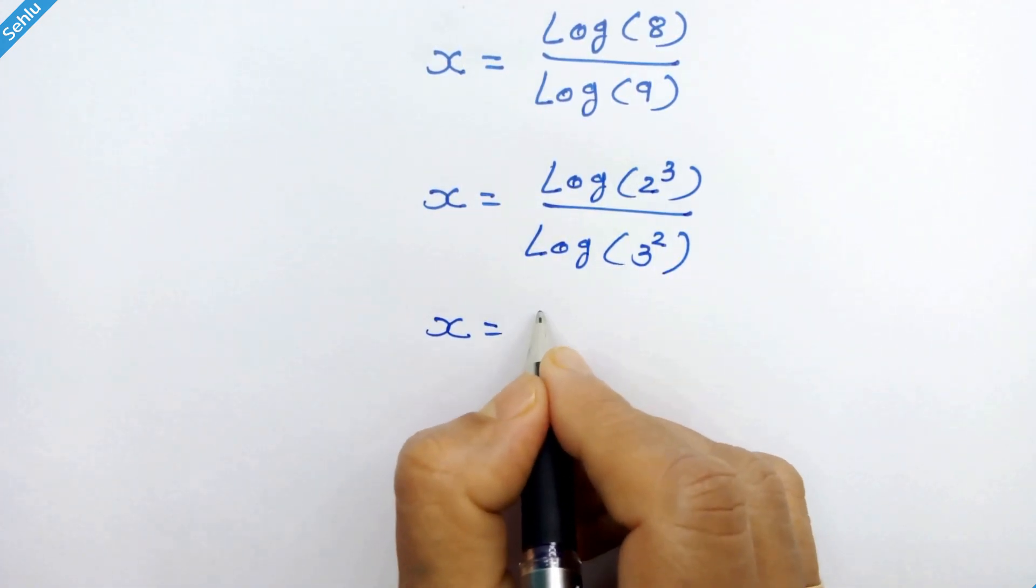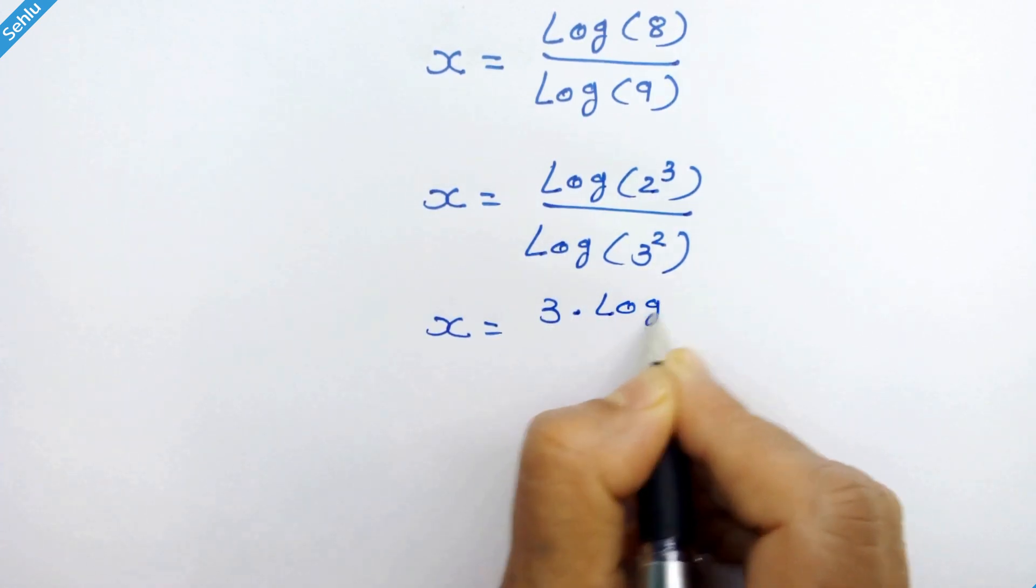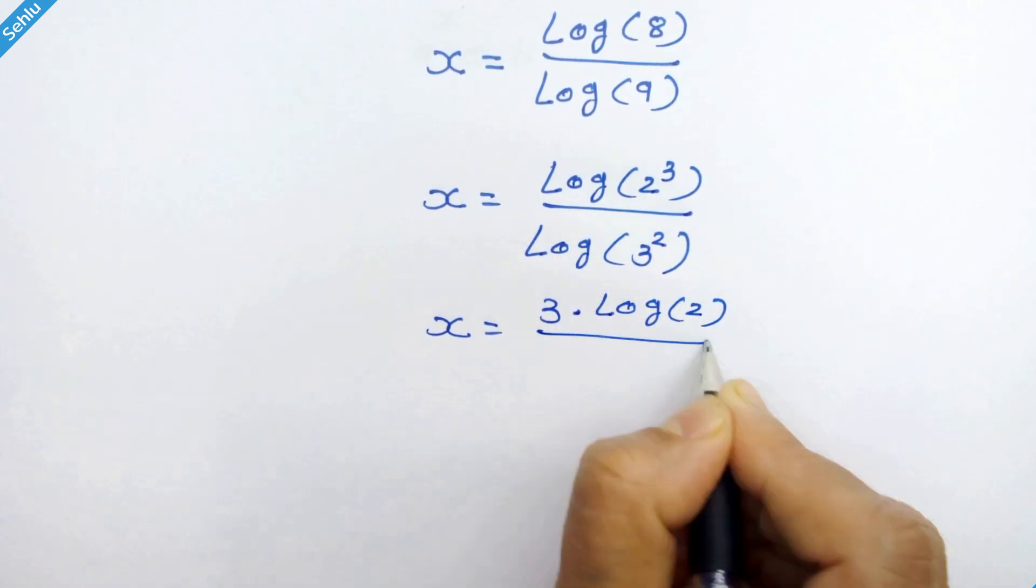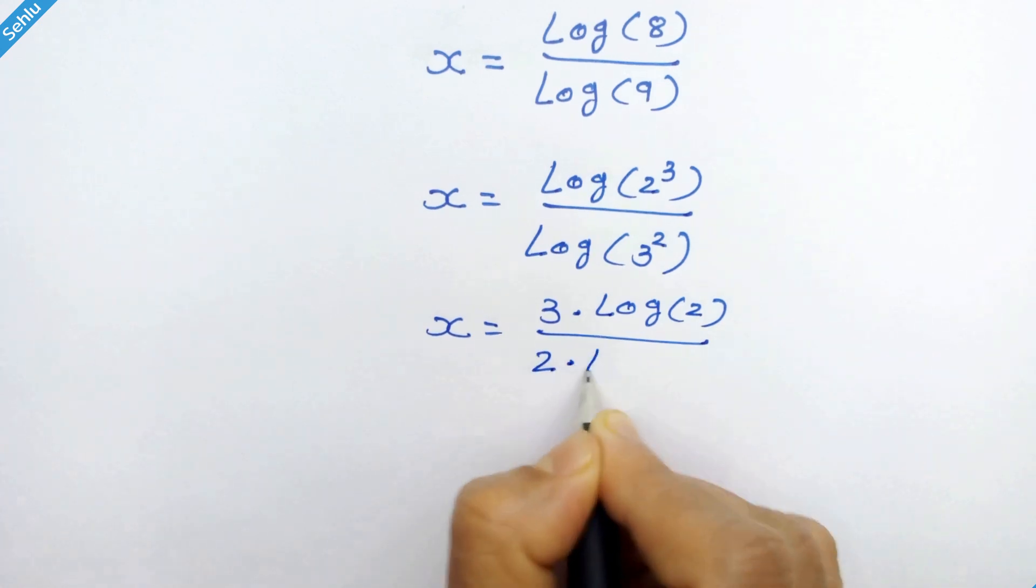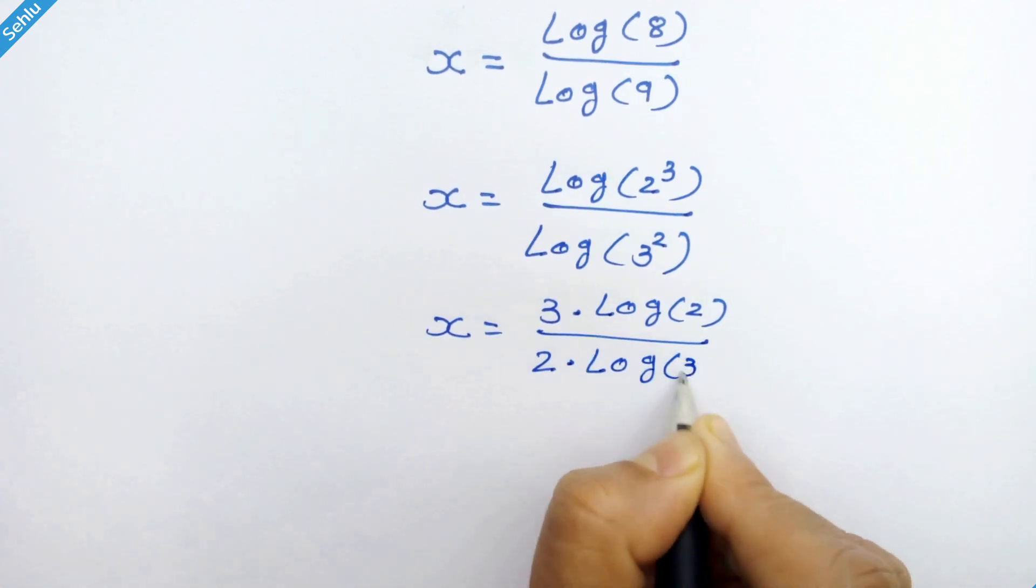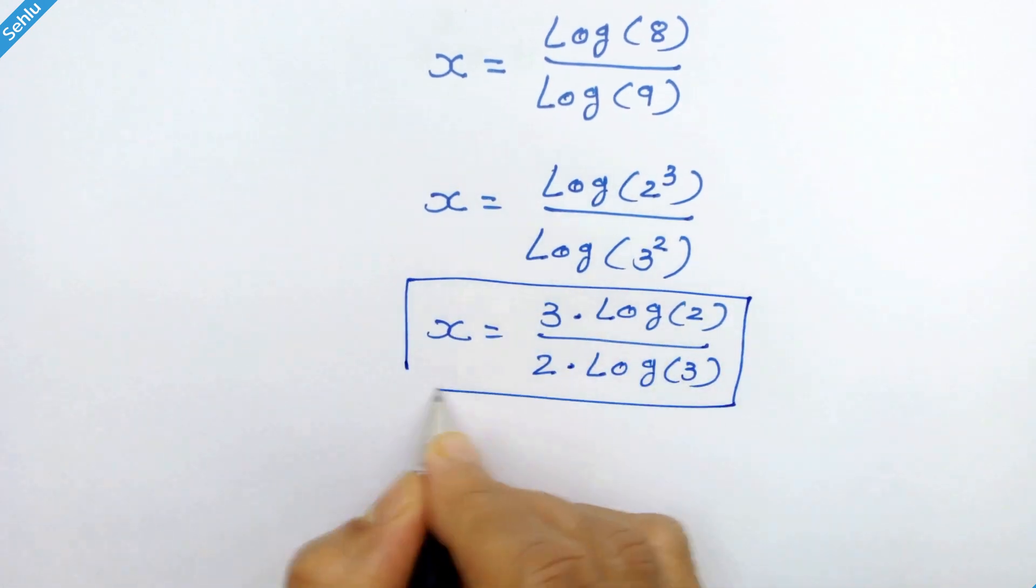So it can be written as 3 times log of 2 over 2 times log of 3. And this is the answer.